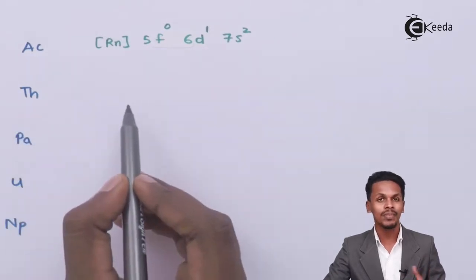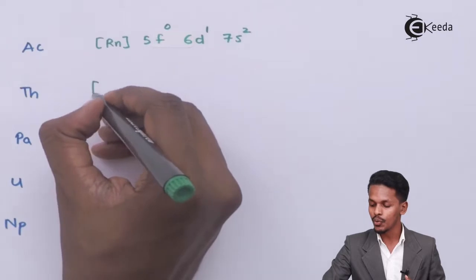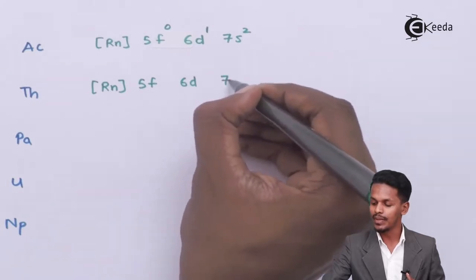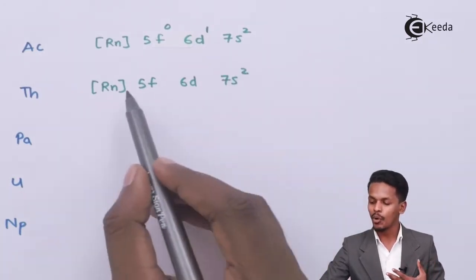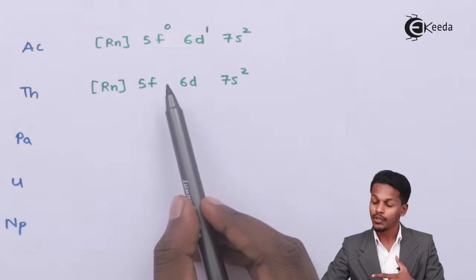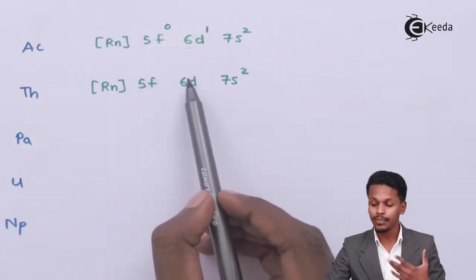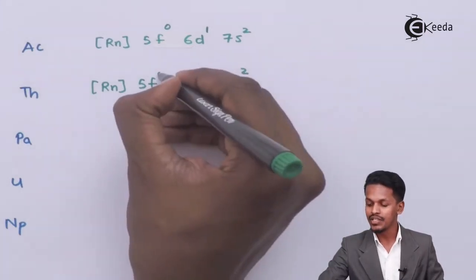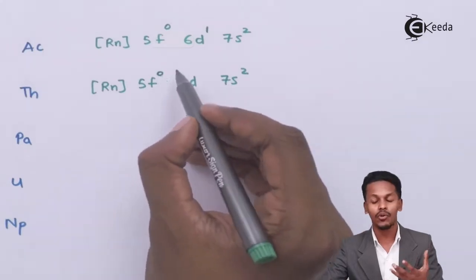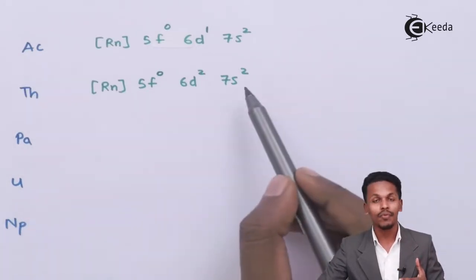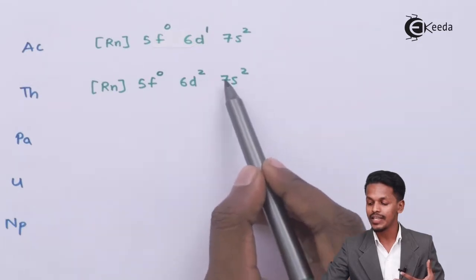For thorium, the first actinoid, the electronic configuration is [Rn] 5f⁰ 6d² 7s². There is already one electron in 6d, and the extra electron can go to either 5f or 6d. Since the f orbital is stable with zero electrons, the extra electron goes to 6d instead, giving an abnormal configuration of 5f⁰ 6d² 7s².